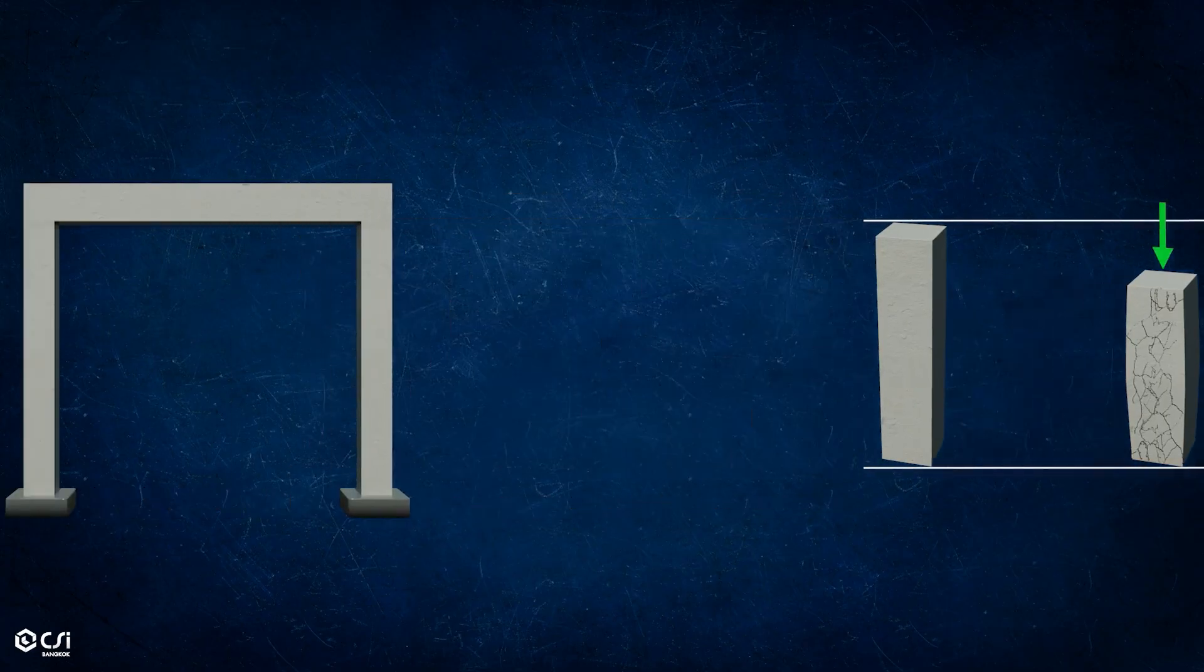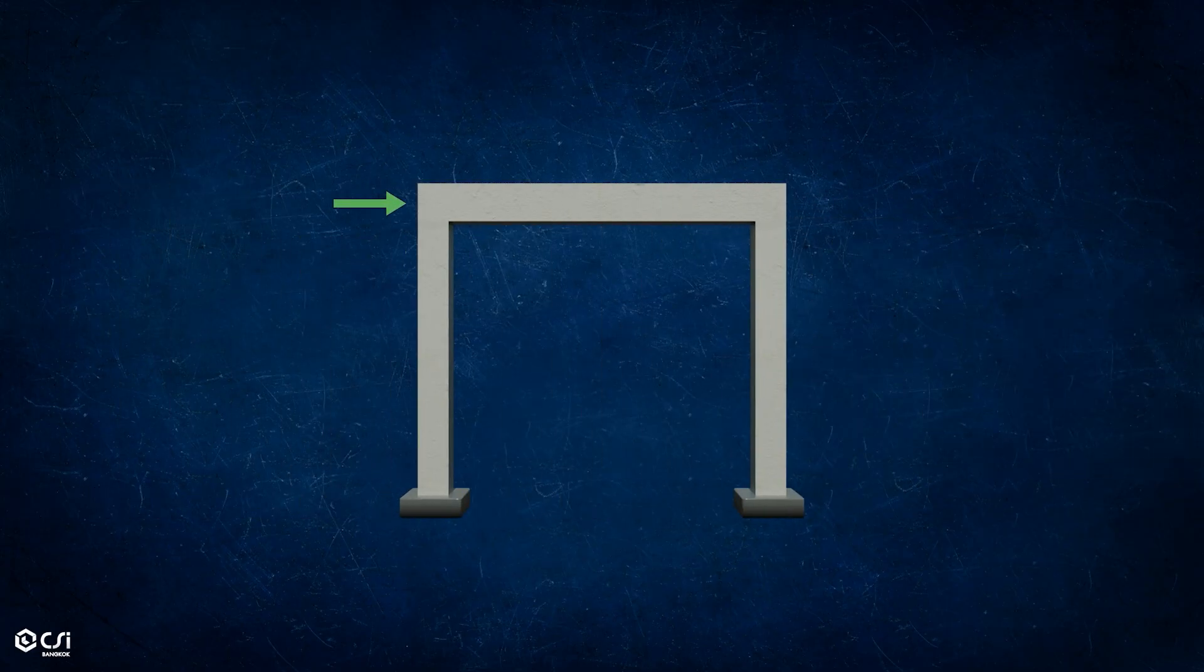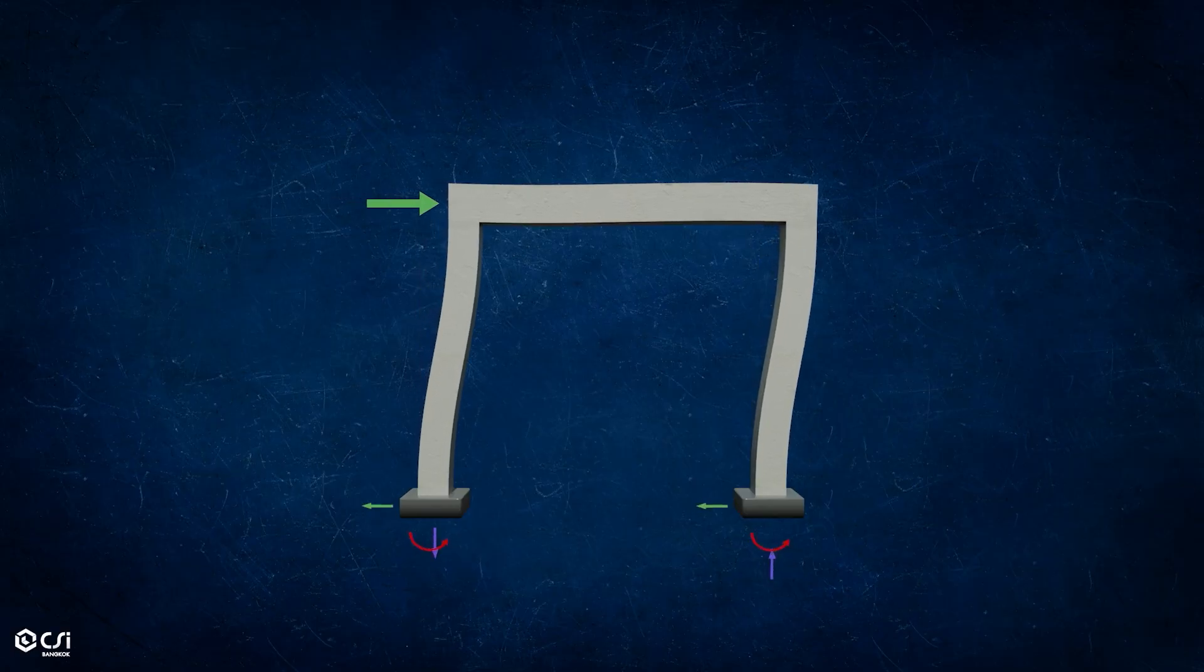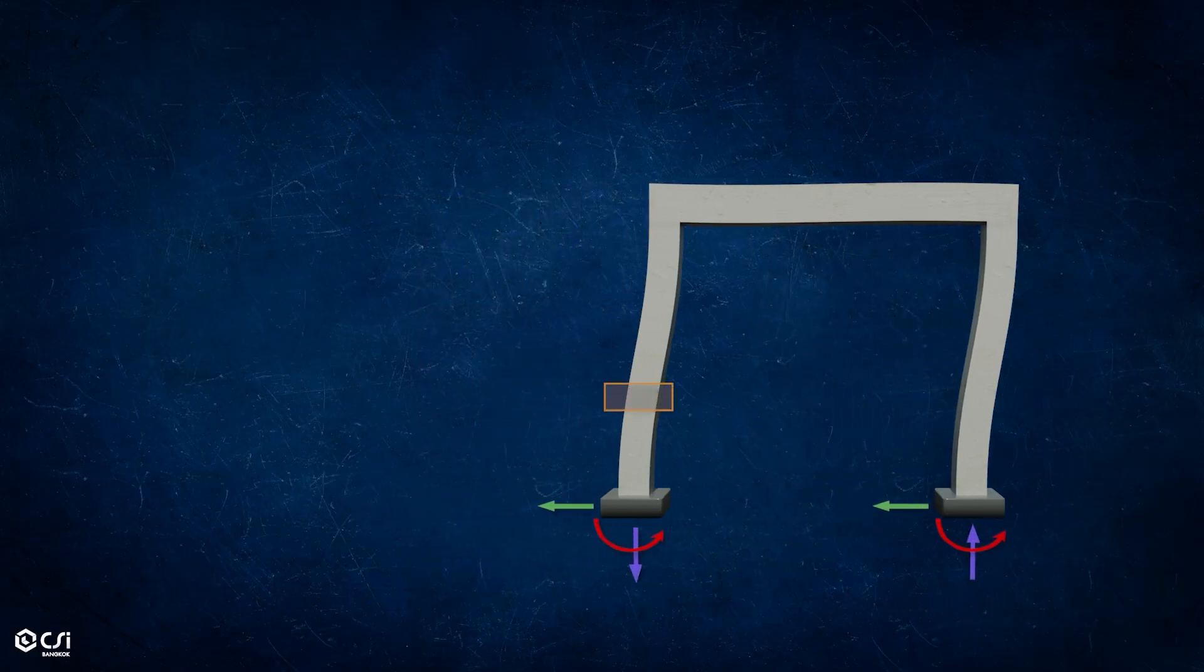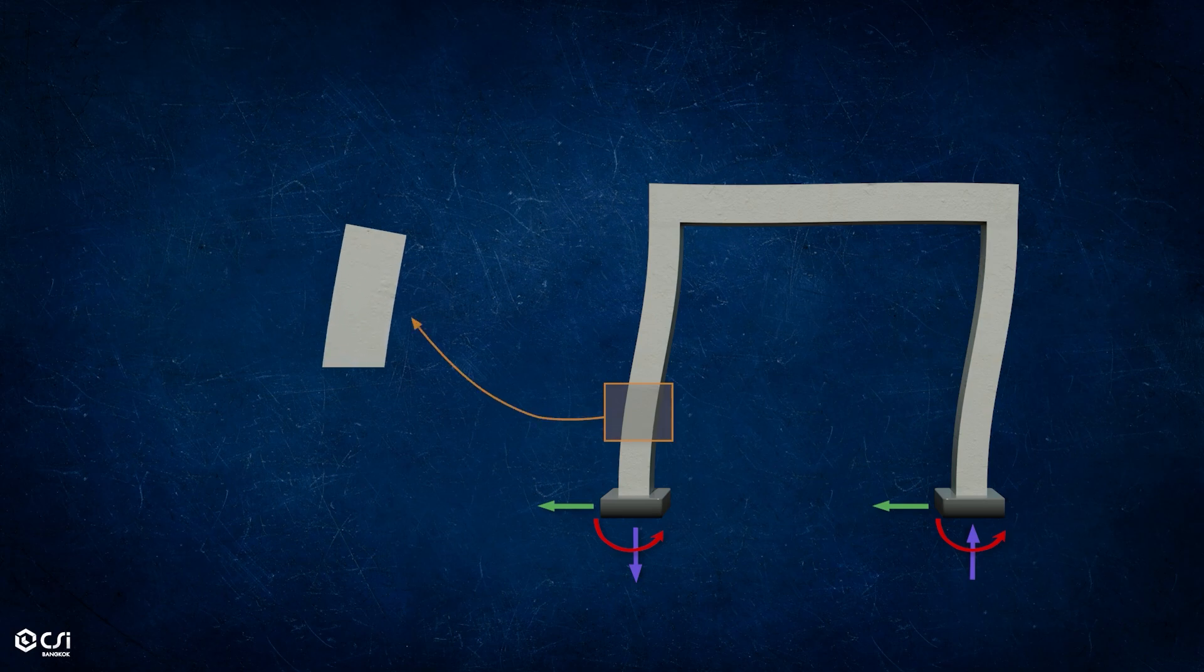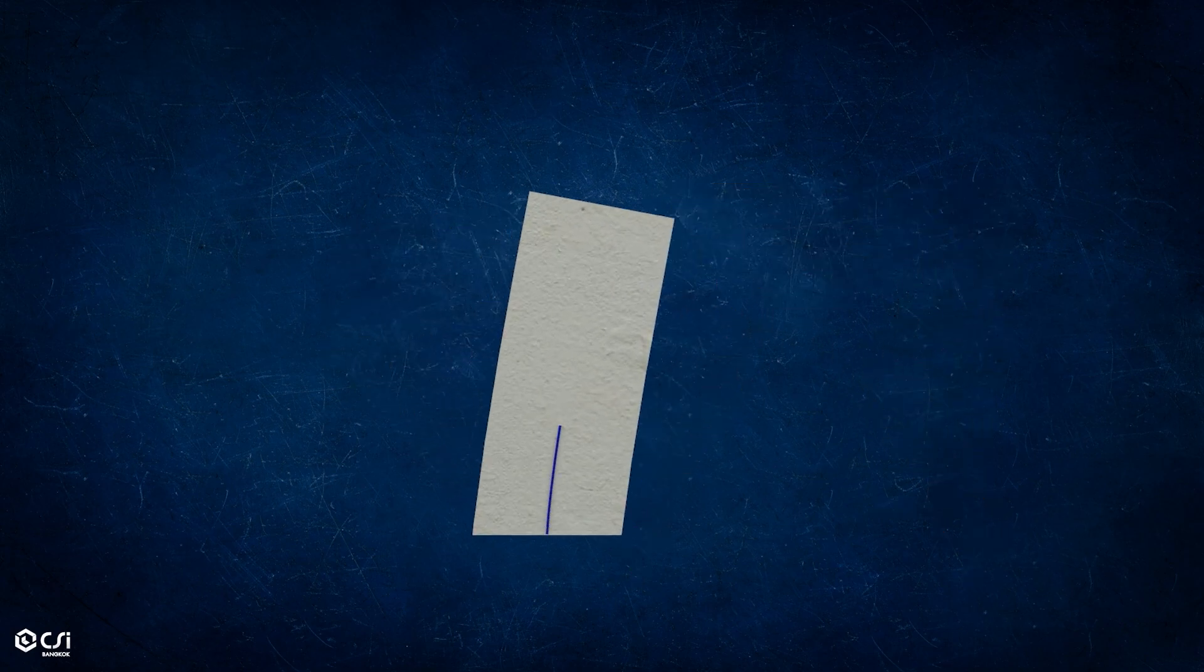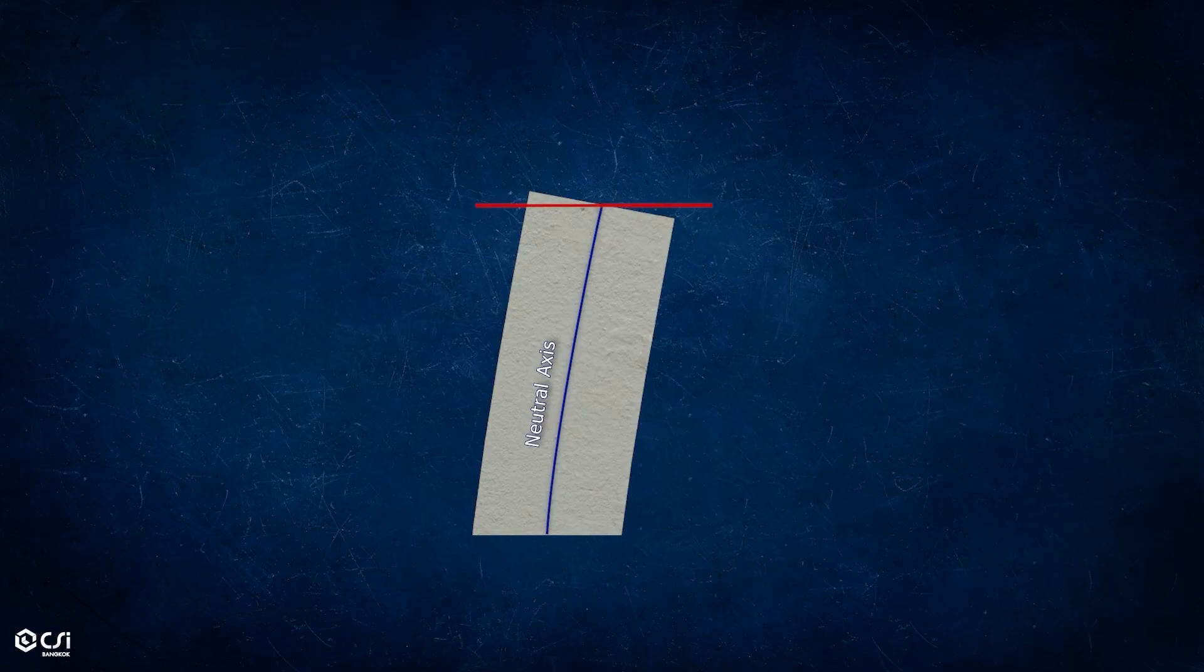This is very significant when structures are subjected to lateral loads such as earthquakes. Due to the bending produced by lateral loads, the cross-sections of columns and beams deform, causing tension on one side and compression on the other.